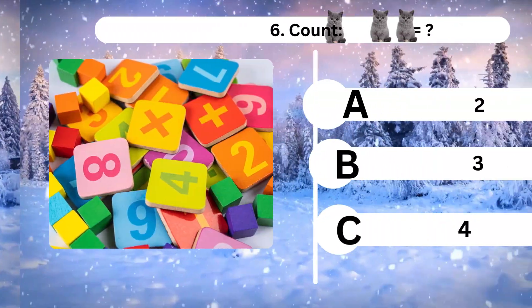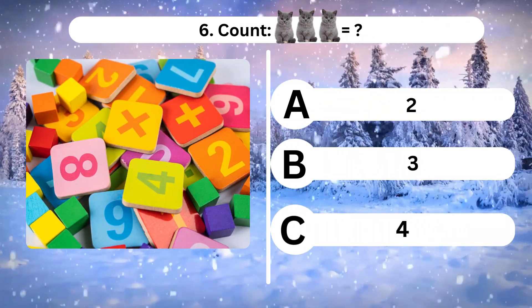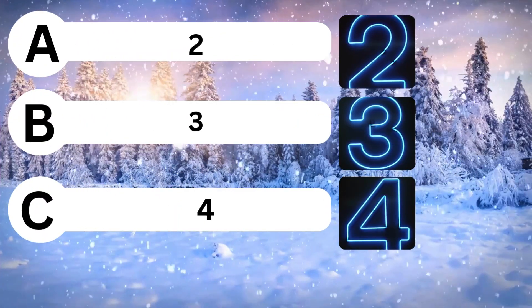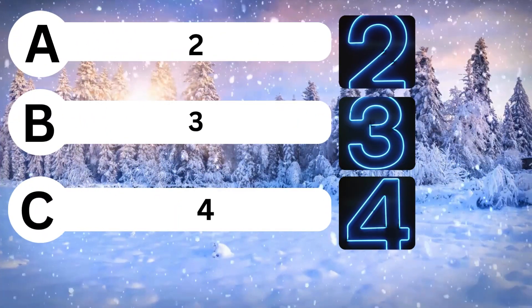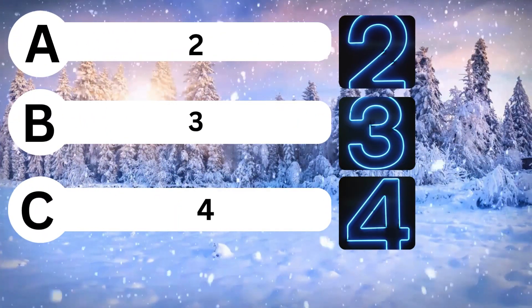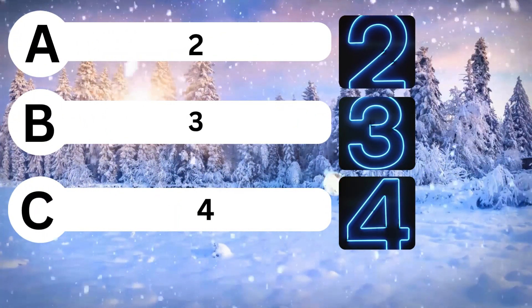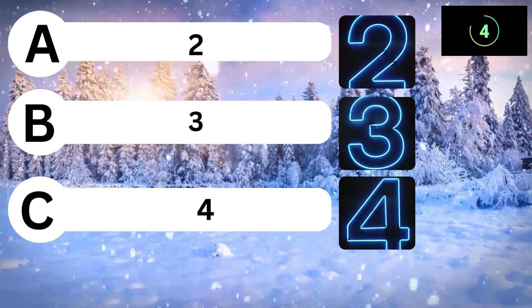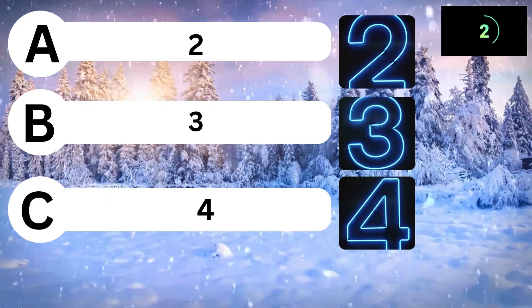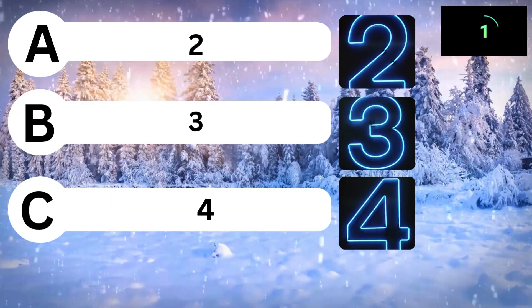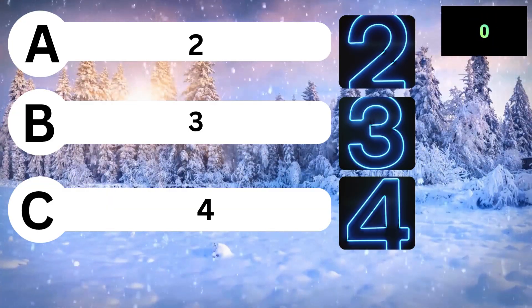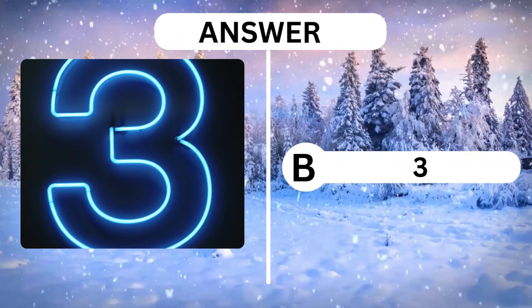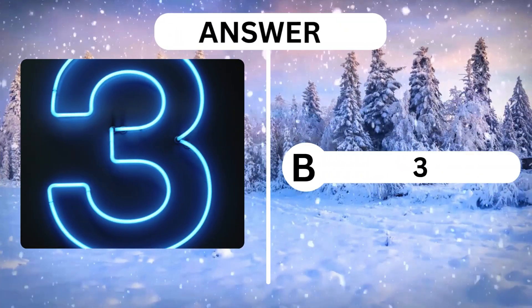Question 6. Count the cats above. A, 2. B, 3. C, 4. Answer is B, 3.